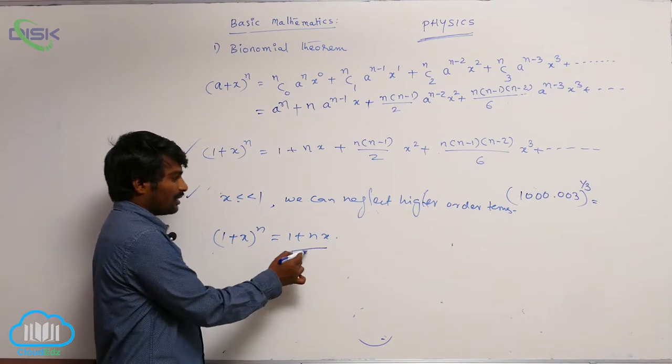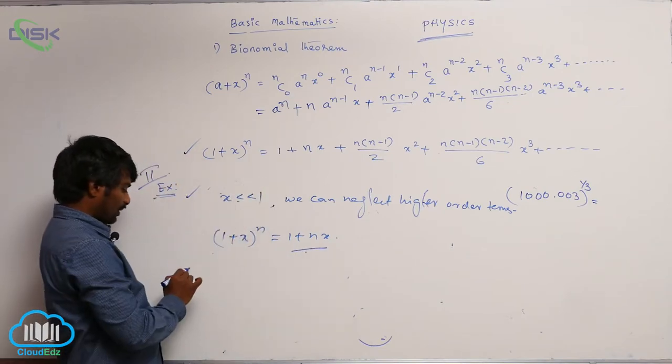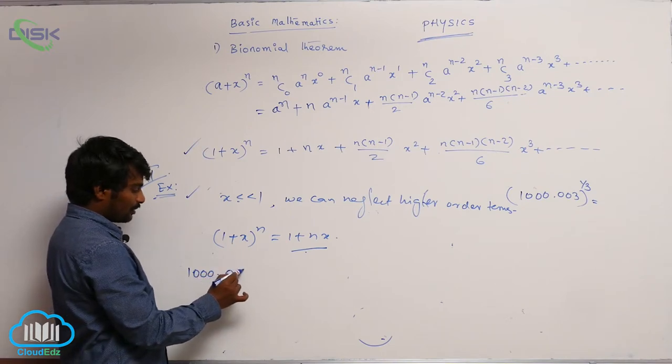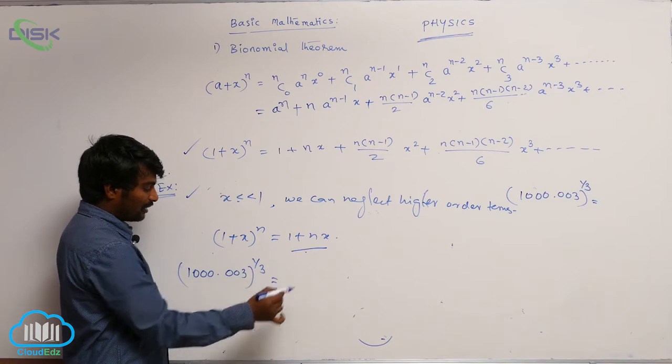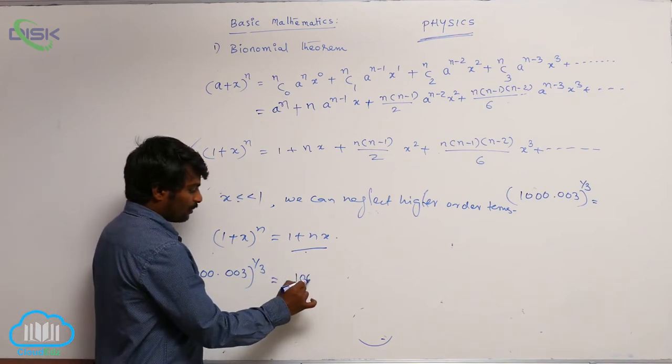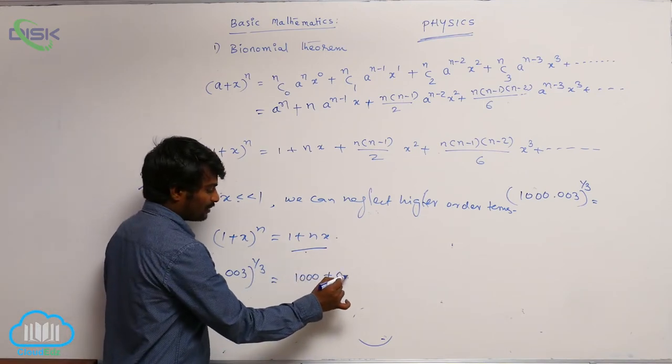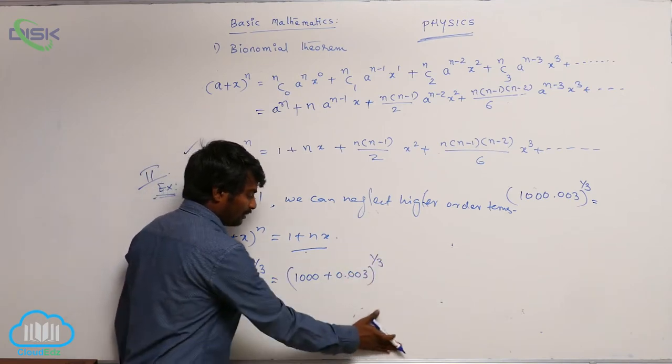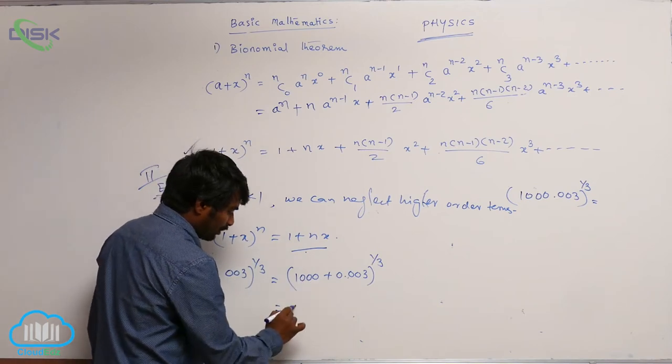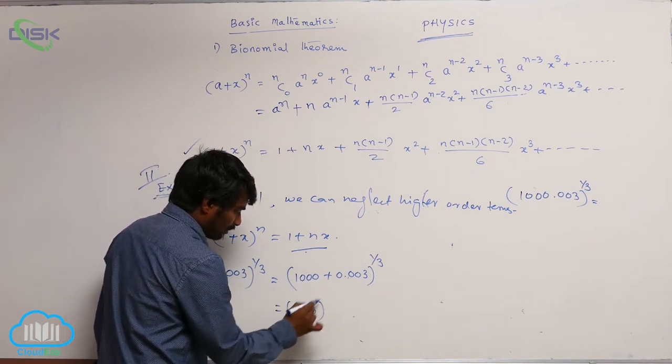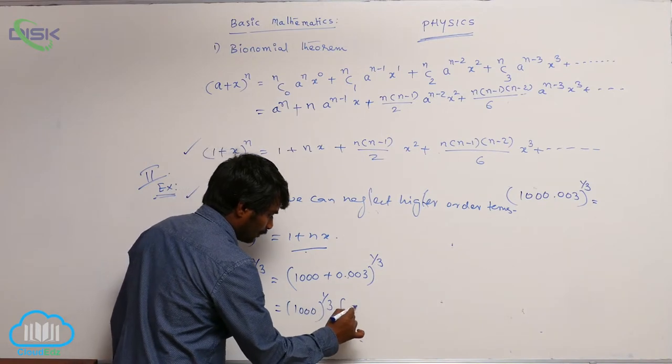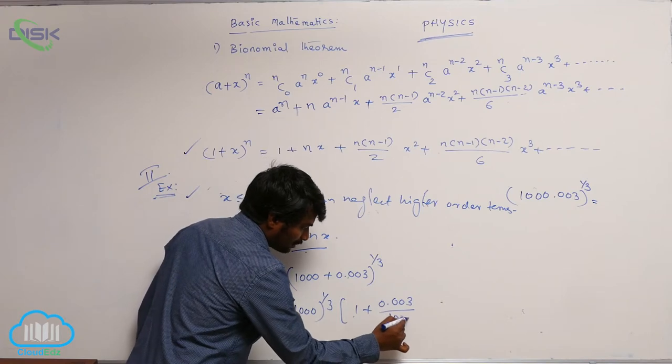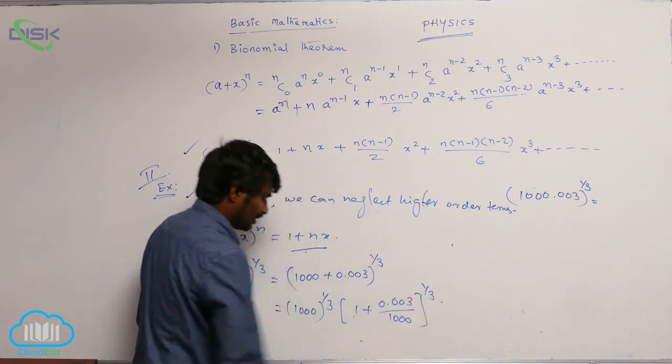So, in the same way, I am going to solve this problem, 1000.003 whole power 1 by 3. I can write it as 1000 plus 0.003 whole power 1 by 3. And if I take 1000 common, 1000 power 1 by 3 into 1 plus 0.003 by 1000 whole power 1 by 3.